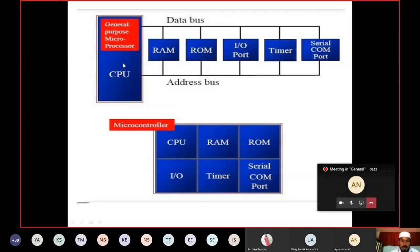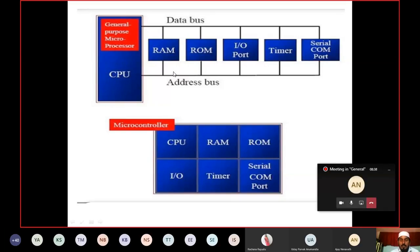Our processor is fabricated on a chip, and RAM, ROM, input-output ports are all external to our IC. They are connected to this chip externally with the help of buses — a data bus and an address bus. CPU, which is fabricated on a chip, is connected to RAM, ROM, and input-output ports with the help of these address buses.